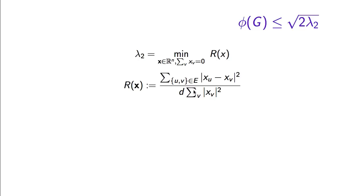Last week, we proved that if lambda k is 0, then the graph must have k connected components or more. In particular, if lambda 2 is 0, the graph must be disconnected. So let's see how this special case works out: how do you argue that if lambda 2 is 0, then the graph must be disconnected?